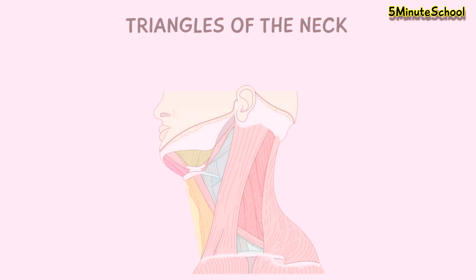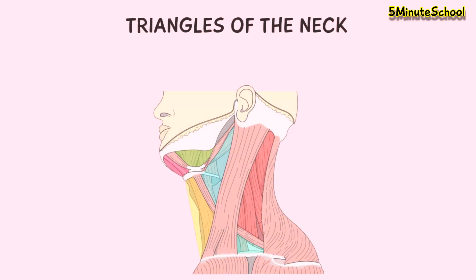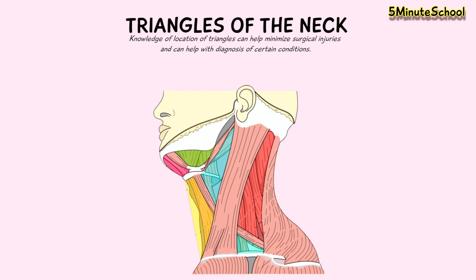In today's video we're going to be talking about the triangles of the neck. This is usually one of the main topics when discussing the anatomy of the neck, and having knowledge of where these triangles are and what they contain is useful — especially in practice — because you tend to minimize surgical injuries and avoid errors when dissecting, when you know the whereabouts of these triangles and what is inside them.